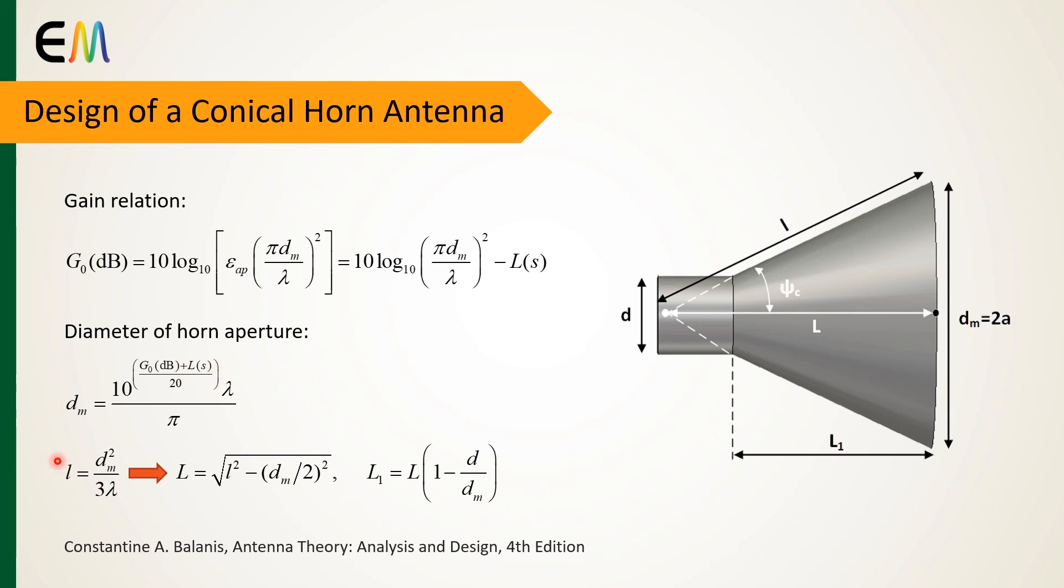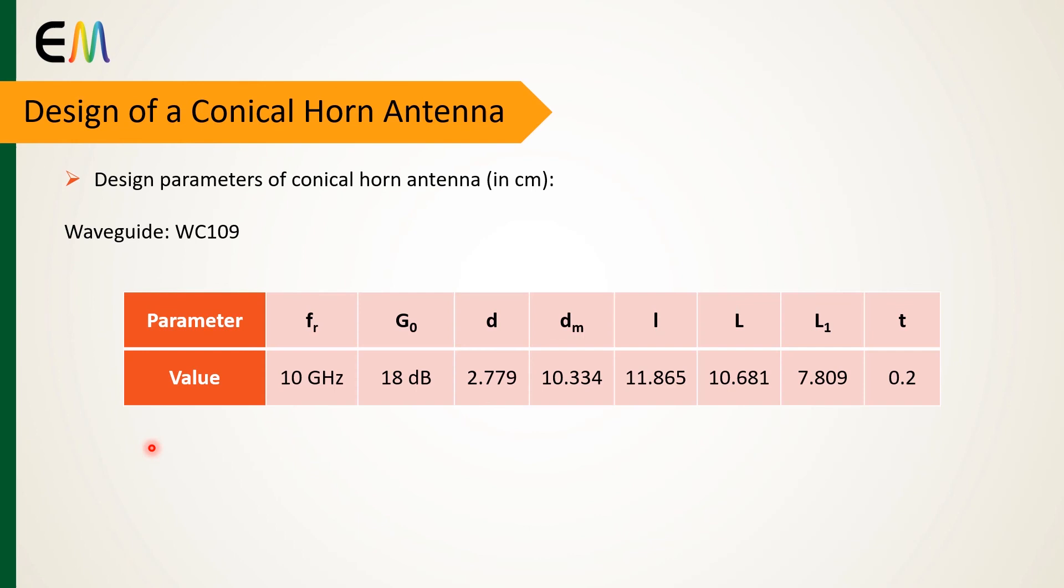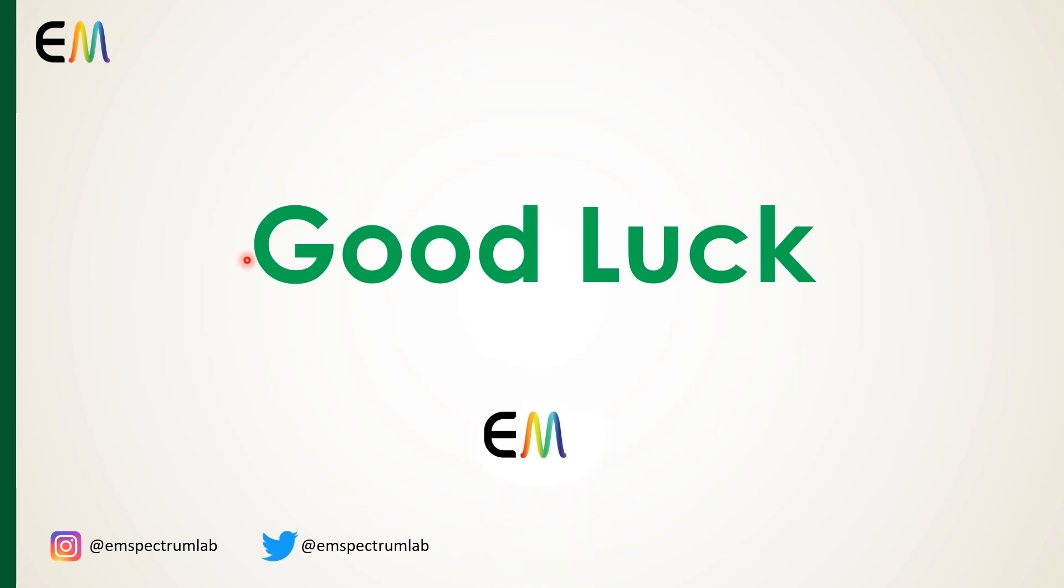And then the other parameters can be obtained. Finally, the physical dimensions of our antenna are calculated and are listed in this table with the frequency of 10 gigahertz and the design gain of 18 decibels and the waveguide of WC-109.